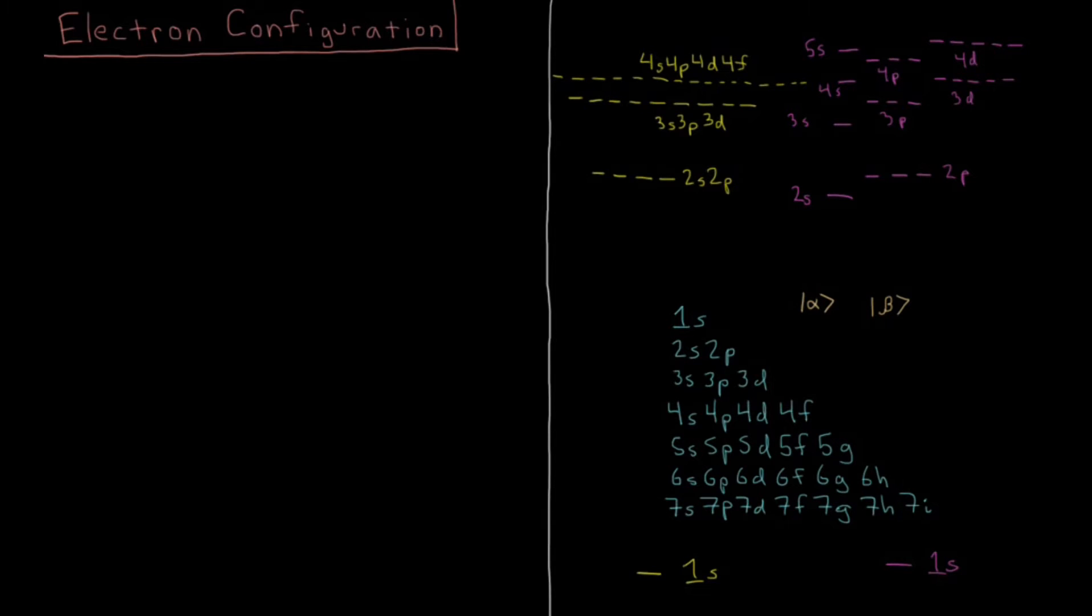In this video we're going to discuss electron configurations. You probably discussed electron configurations of atoms in general chemistry and you're familiar with the 1s², 2s², 2p⁶ type of nomenclature. But now that we know more about quantum mechanics and Hartree-Fock theory and atomic orbitals, we can better understand why these electron configurations result and understand the exceptions to the rules.